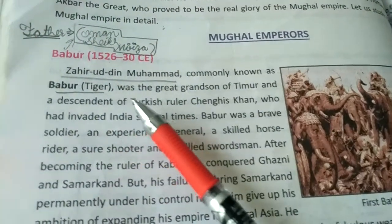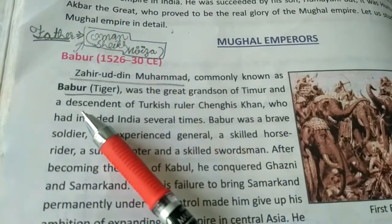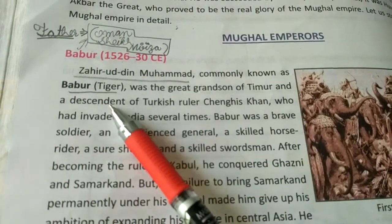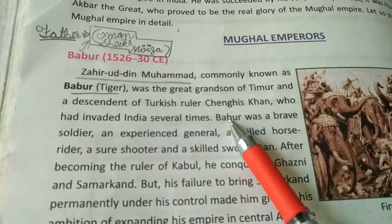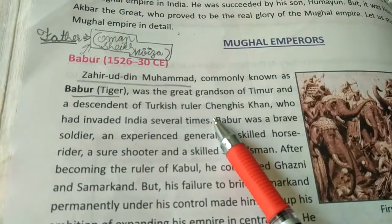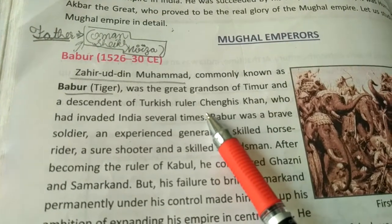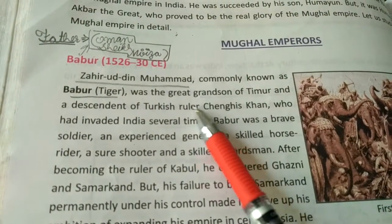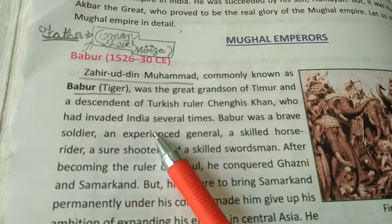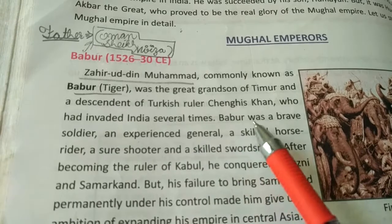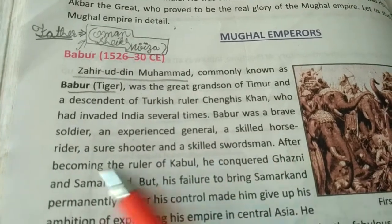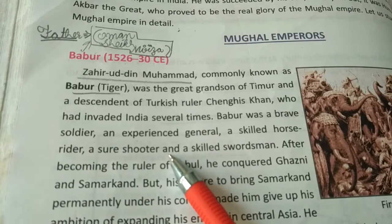Zahiruddin Muhammad, commonly known as Babur, meaning Tiger, was the great-grandson of Timur and a descendant of the Turkish ruler Chingiz Khan. Babur was a brave soldier and experienced general, a skilled horse rider, a sure shooter, and a skilled swordsman.